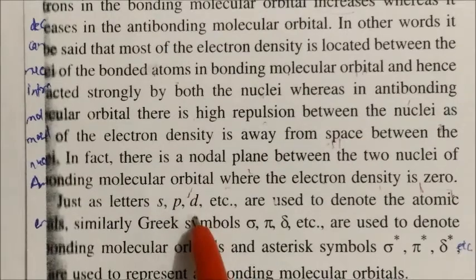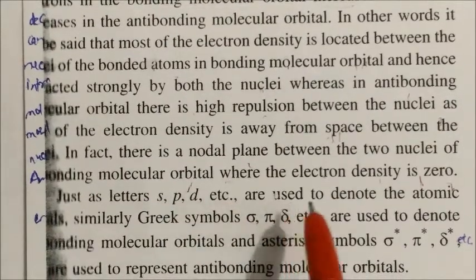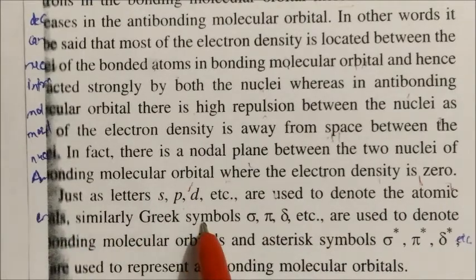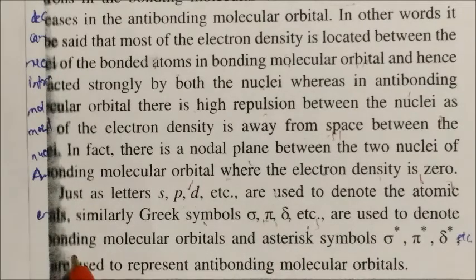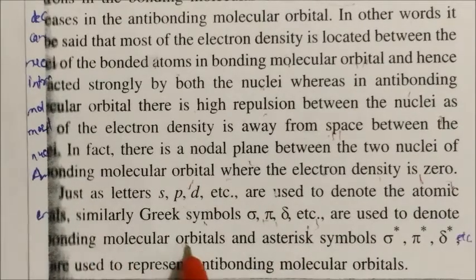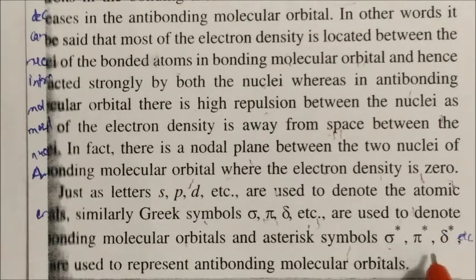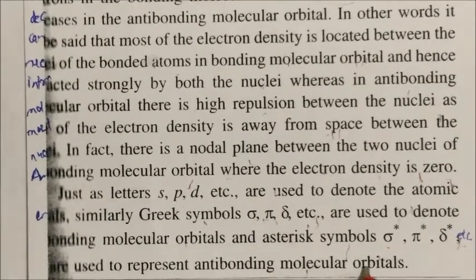Just as the letters s, p, d, etc. are used to denote atomic orbitals, similarly Greek symbols like sigma (σ), pi (π), delta (δ), etc. are used to denote bonding molecular orbitals. Asterisk symbols — sigma star (σ*), pi star (π*), delta star (δ*), etc. — are used to represent anti-bonding molecular orbitals.